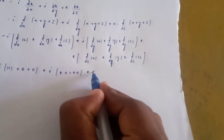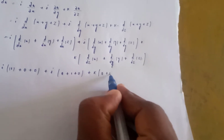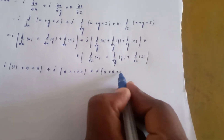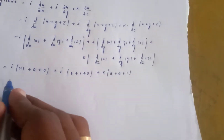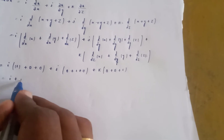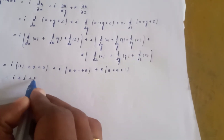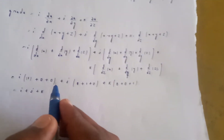Each partial derivative gives 0 plus 0 plus 1. So grad a equals i plus j plus k.